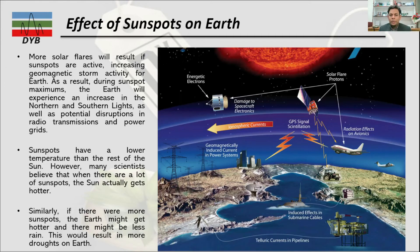If we have more sunspot activity, the sun becomes hotter and the effect on earth is less rainfall. Looking at 2022, we have less sunspot activity, so the temperature is gradually decreasing on the surface of the earth. That is also one reason for global climate change. If you recall, around 2013, 2014, and 2015, it was quite hot in many regions.